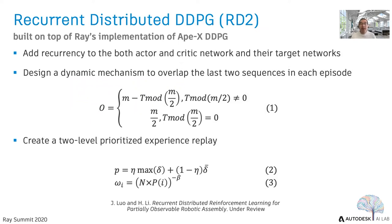Based on APEX DDPG, RD2 adds recurrency to both the actor-critic networks and their target networks, so the RL agent has memory for previous states and actions, which improves performance in partially observable tasks. However, we found that adding recurrency alone cannot achieve stable training.